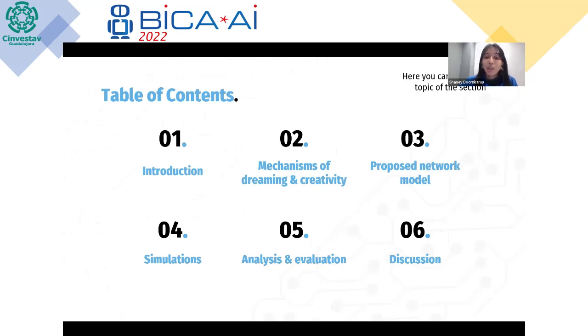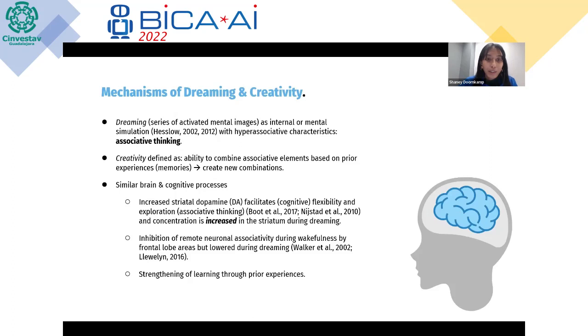I'm going to talk about mechanisms, our model that we designed, simulations, and discussion. First, we define dreaming as a series of activated mental images as internal or mental simulation with hyper-associative characteristics, such as different types of contents in your head that are non-obviously connected to each other. This hyper-associative characteristic means they could be connected even though it does not seem plausible, for example relating an ape to iron. Creativity is defined as the ability to combine associative elements, meaning to create a new combination using previous experiences. We found in literature that there are similar brain and cognitive processes.